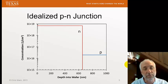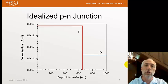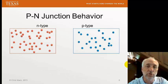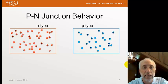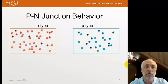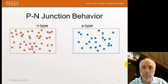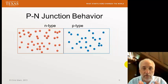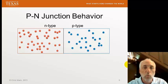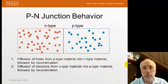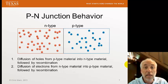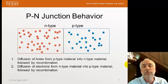The main purpose of the idealized P-N junction is to give us a feel for the physics. Let's look at the behavior: imagine a big block of N-type material and a big block of P-type material being brought together to make contact. What's going to happen?